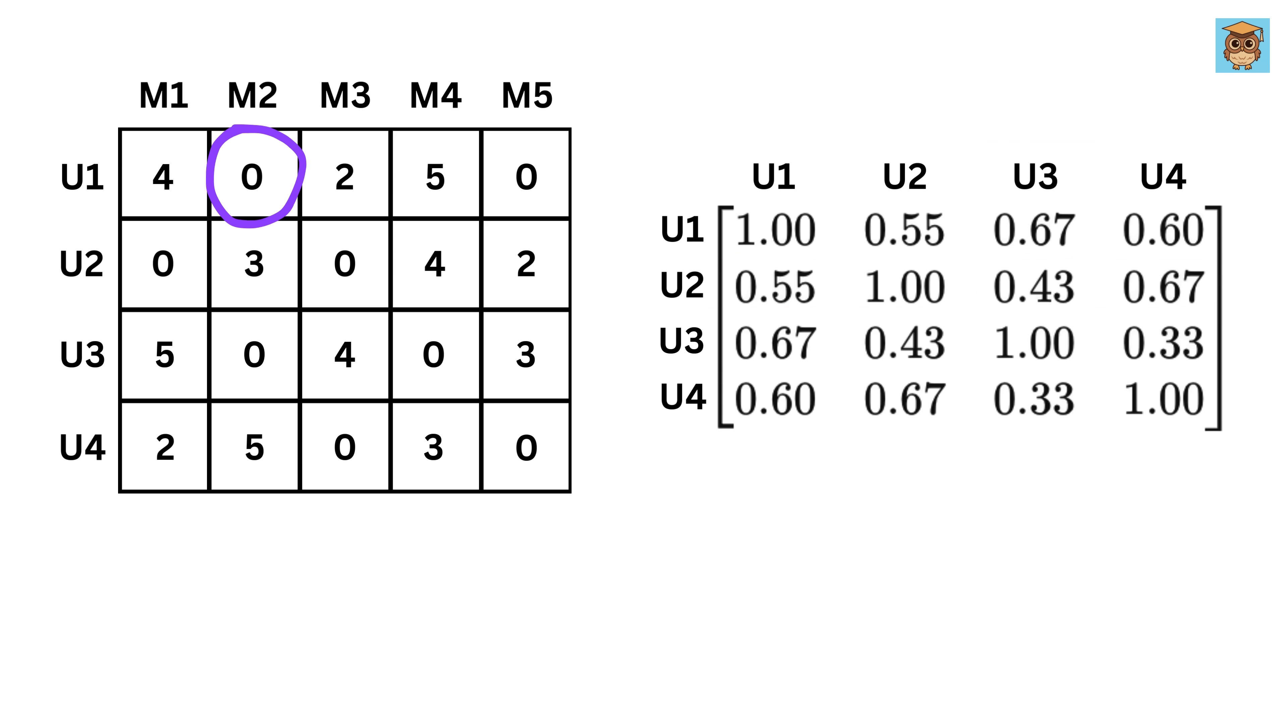Next, we will try to predict user one's rating for movie two. To predict a rating for user one on movie two, we use the weighted average of ratings from similar users. Which other users have rated movie two? User two gave it three, user four gave it five, user three gave it zero. Means user three didn't watch movie two. We use only those who rated it, like user two and user four.